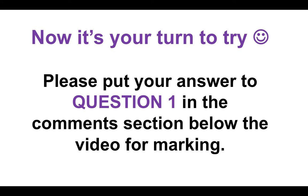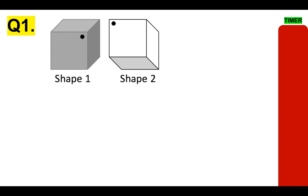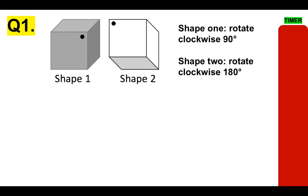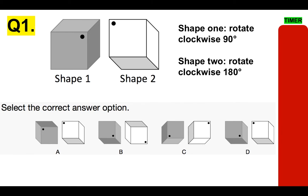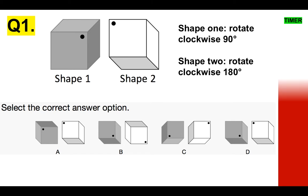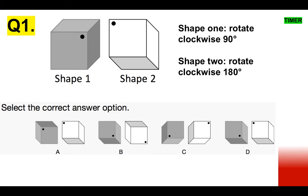Now it's your turn. Please put your answer to question 1 in the comments section below the video, and we'll come on each day and mark them for you. On the right-hand side you will see a red timer — by the time that reaches the bottom, I'm going to move on. You've only got about 10 seconds to answer this question, which is quite tough. But if you can answer these in 10 seconds, you're doing brilliantly. So you've got SHAPE 1 and SHAPE 2: rotate SHAPE 1 clockwise 90 degrees, and SHAPE 2 clockwise 180 degrees. Is it A, B, C or D? Don't forget to put your answer in the comments section below for marking.